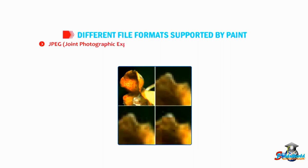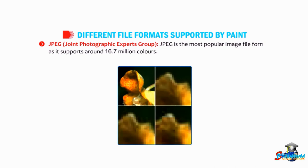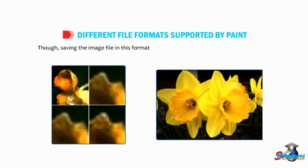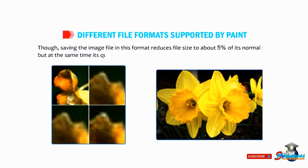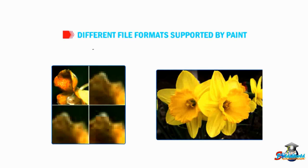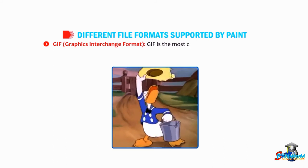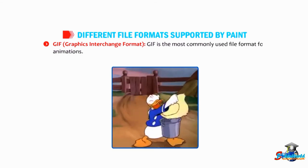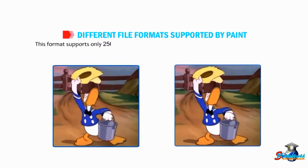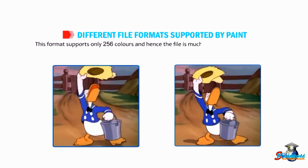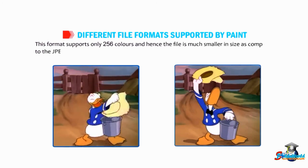JPEG (Joint Photographic Experts Group): JPEG is the most popular image file format as it supports around 16.7 million colors. Though saving the image file in this format reduces file size to about 5% of its normal size, but at the same time its quality also gets affected. JPEG format is ideal for rich color photographs. GIF (Graphics Interchange Format): GIF is the most commonly used file format for animations. This format supports only 256 colors and hence the file is much smaller in size compared to the JPEG format.